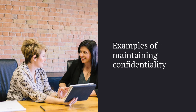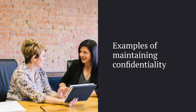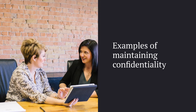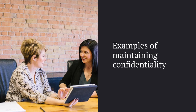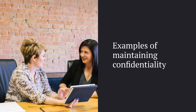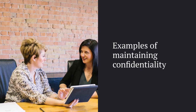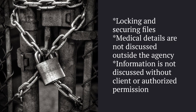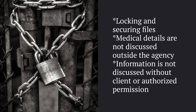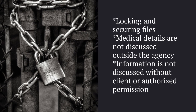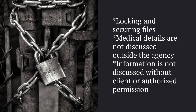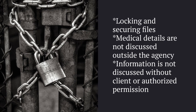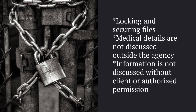Every agency is different, but there should be some type of protocol in place for maintaining confidentiality. Here are some examples of how you can maintain confidentiality — you may already have these in place, but if not, you need to develop a policy. One way is locking and securing files — as simple as a file cabinet with a lock and key, typically kept in an office. Medical details should not be discussed outside of the agency, and it remains a need-to-know basis. Finally, information should not be discussed without client or authorized permission.